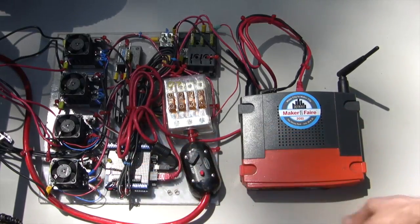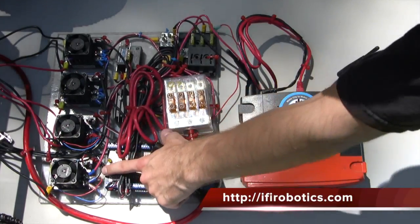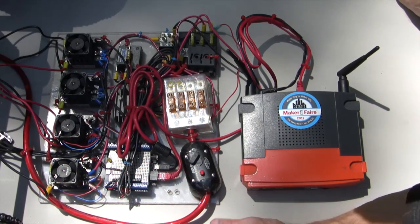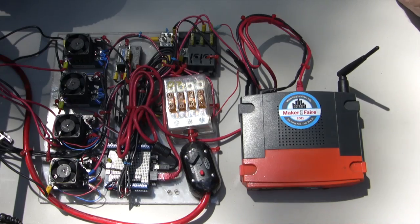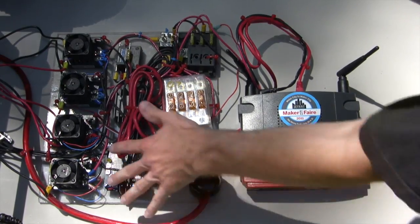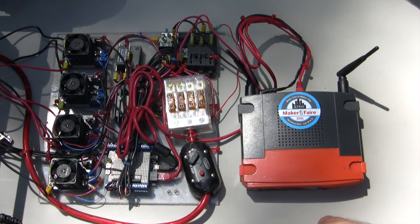These are Victor 883 speed controllers by IFI. They cost about $150 bucks a pop, which is probably a little expensive for your budget. So if you're building a smaller robot, you can definitely get away with a cheaper speed controller in the $40 to $50 price range. But since we are driving some pretty beefy motors, we decided to go with these guys because they can handle 60 amps of continuous current, which is really nice.